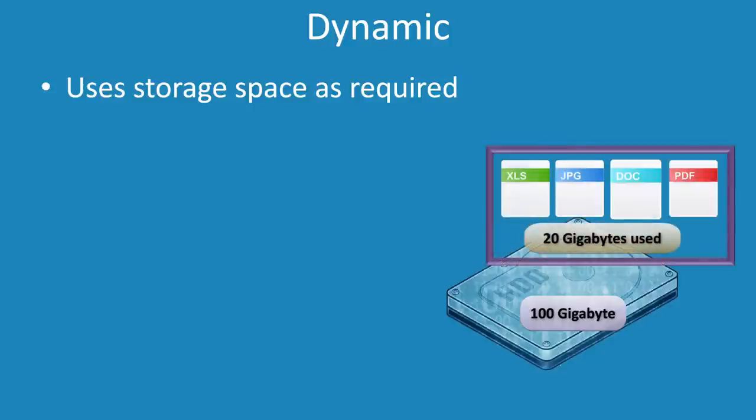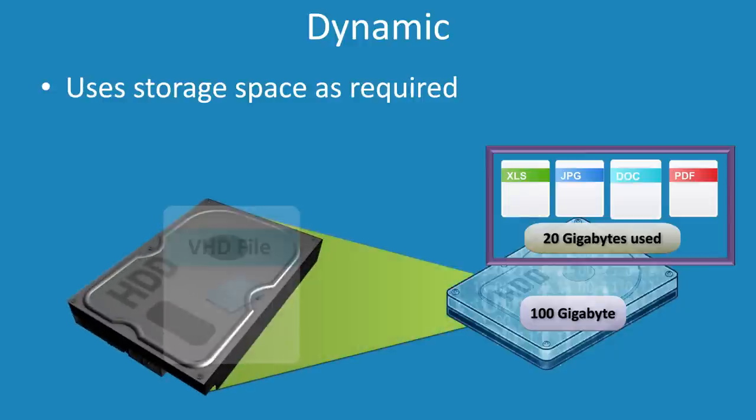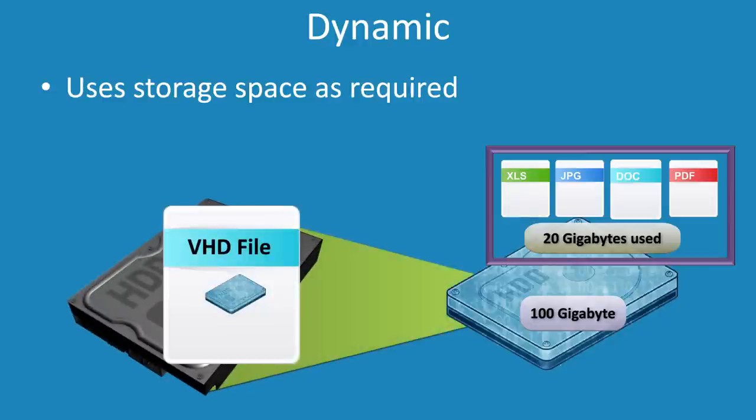If 20 gigabytes of files were placed on the virtual hard disk, the VHD file on the physical drive would increase in size to 20 gigabytes — up to a maximum of 100 gigabytes. You can see why some administrators will create dynamic drives bigger than what they feel they need, in case they need more space later on.